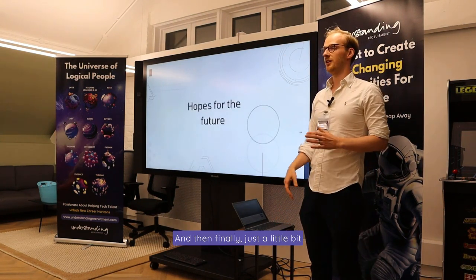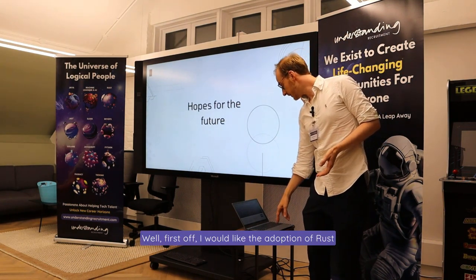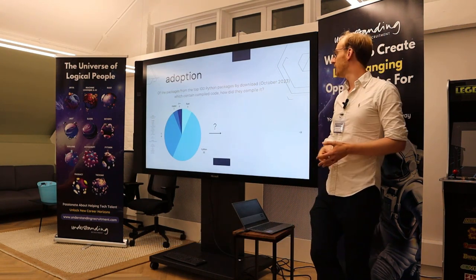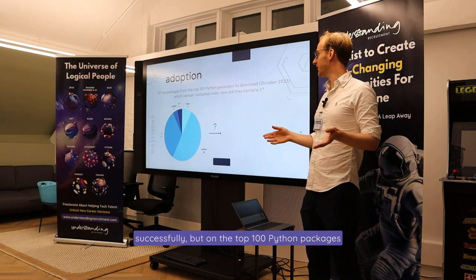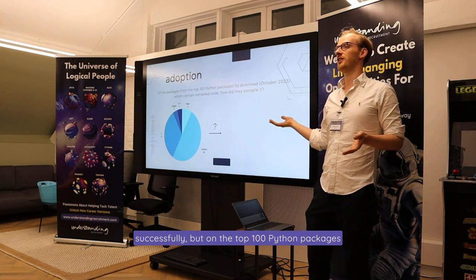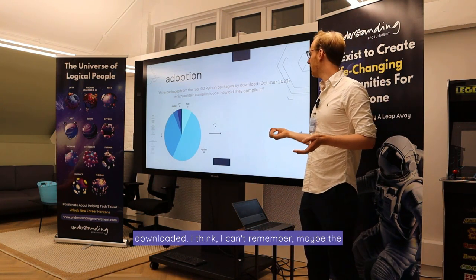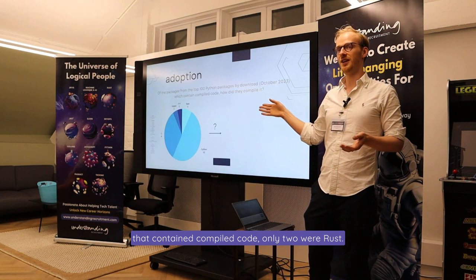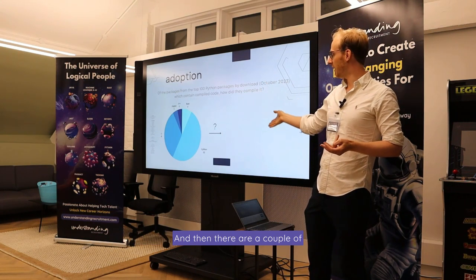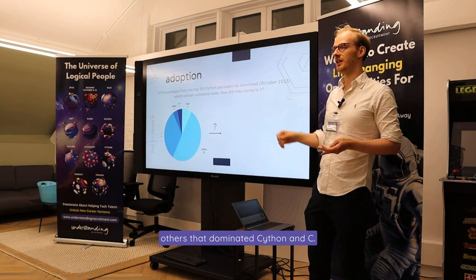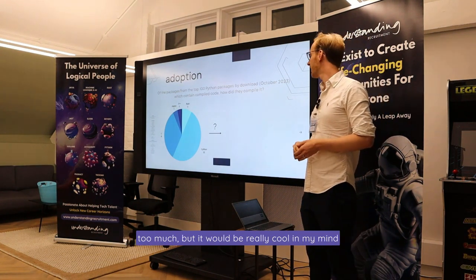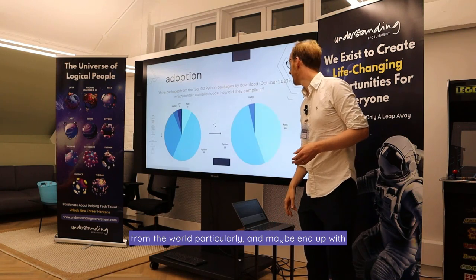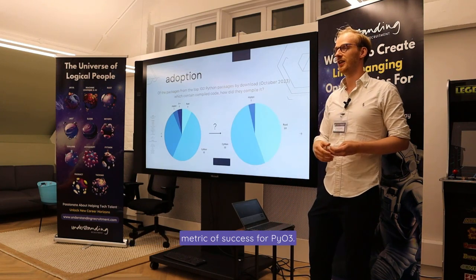A little bit about my hopes for the future. I would like the adoption of Rust to go further than it currently has. Of the top 100 Python packages downloaded, I found there were 24 that contained compiled code, but only two were Rust. It would be really cool if we could eliminate some of the C and C++ from the world, and end up with a graph that looks more Rust-heavy. That would be my metric of success for PyO3.